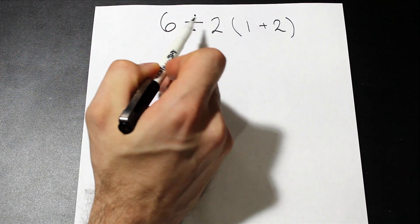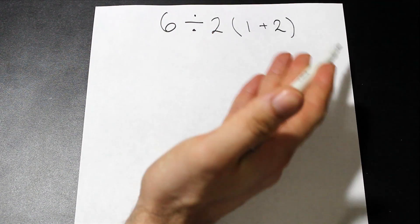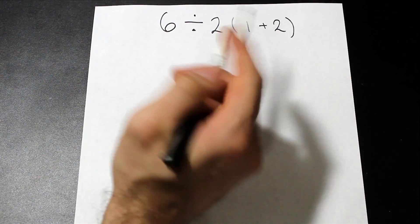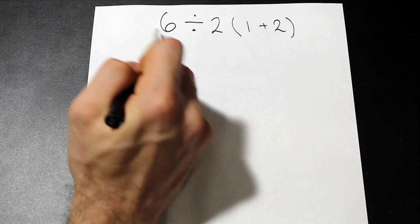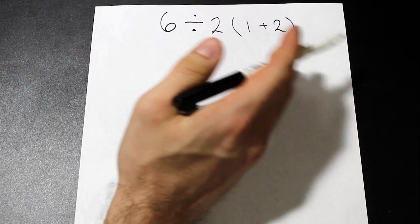You don't normally get this division sign and then some operation like two times a bracket. Usually you would get this in terms of a rational number, maybe six over two times one plus two. So that's where the confusion comes in.